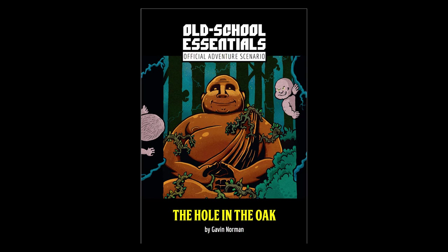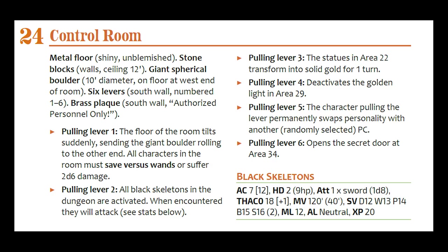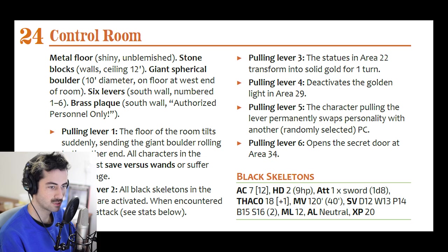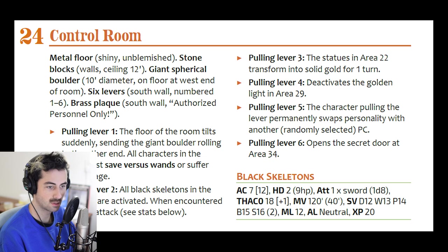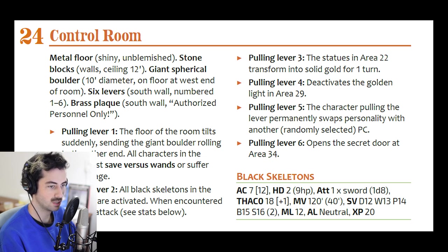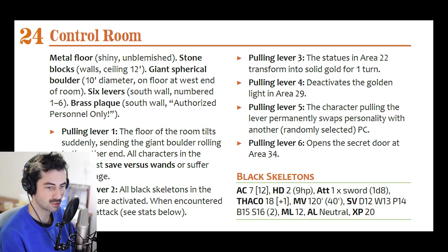The Hole in the Oak by Gavin Norman, room number 24, Control Room. Here you can see Old School Essentials branded style on display — bold descriptors followed by details in parentheses. The stat block is included here, which is nice. I will say that I'm still not entirely convinced of this style over logical presentation. I would like to think that the writer of the adventure has more time than I do to come up with a pleasant order of words to link together the room features.